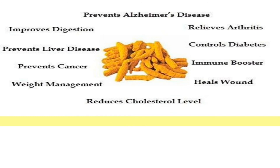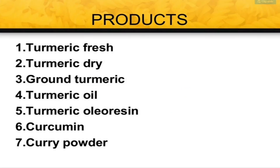Now let's look at the products in which turmeric is used. These include fresh turmeric, dry turmeric, ground turmeric, turmeric oil, turmeric oleoresin, curcumin, and curry powder. These are the basic products in which turmeric plays a major role.